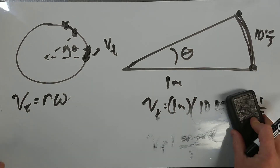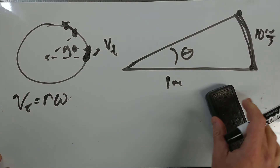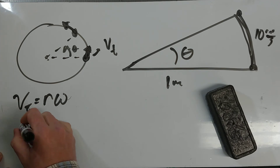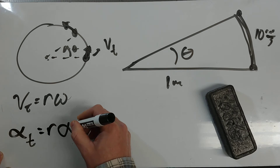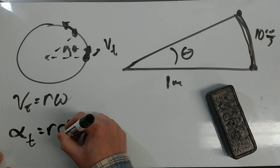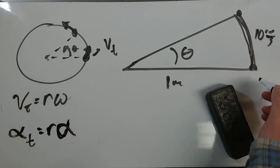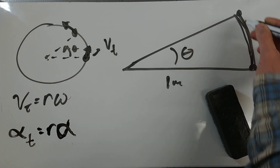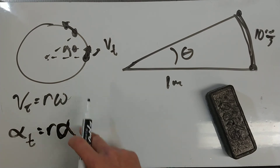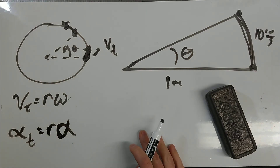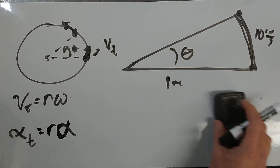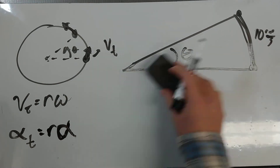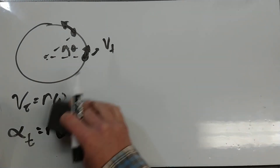That also means if the object is speeding up, the linear acceleration of the object moving along the arc is simply R times alpha — R alpha. So you're going to need that.